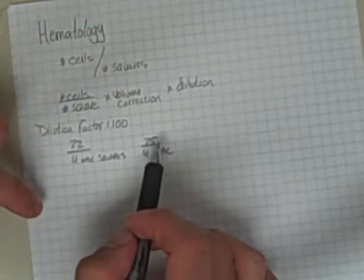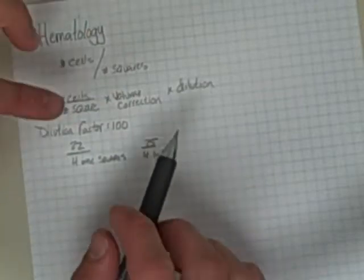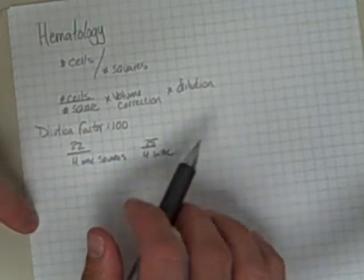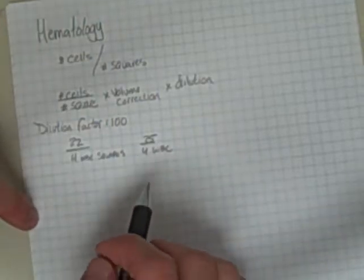If they were drastically different, I would know that I charged the hemocytometer unequally on one side versus on the other side, and I would need to correct that before I did a count.